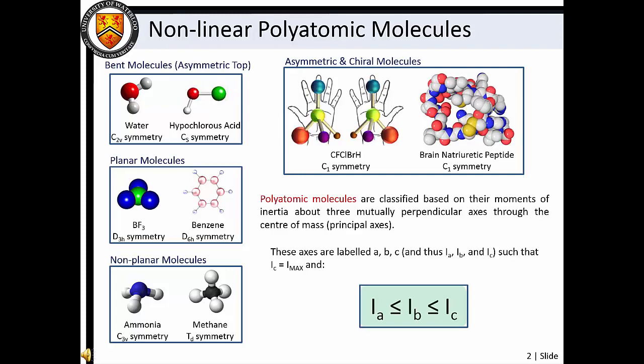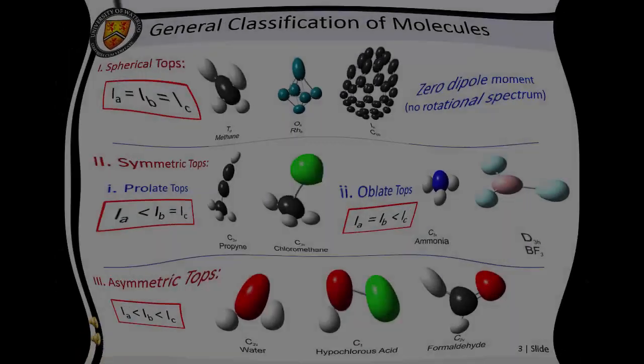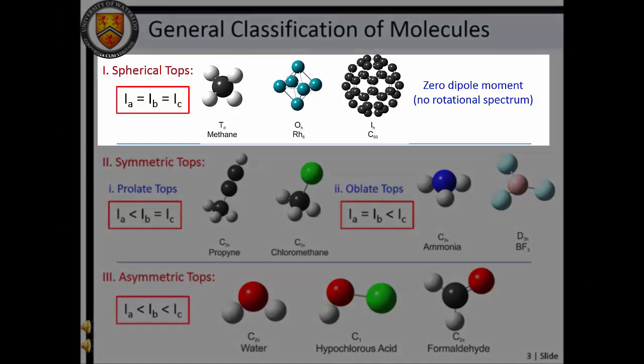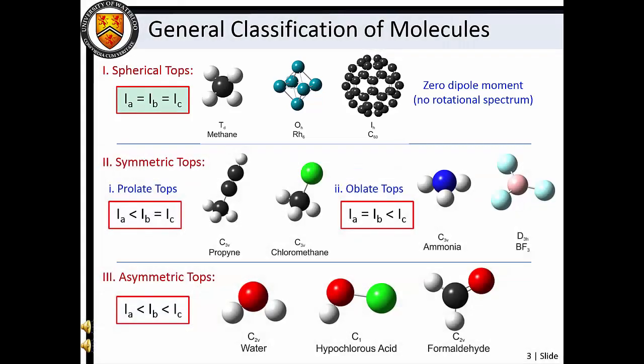This is followed by I_B, and I_A is the smallest moment of inertia. Molecules in which all three moments of inertia are equal are known as spherical tops. Spherical top molecules are highly symmetric species, so they have no permanent dipole moment. As a result, spherical top molecules do not exhibit a pure rotational spectrum.